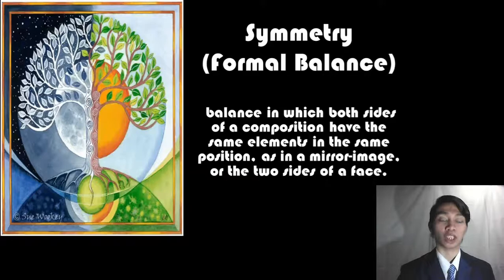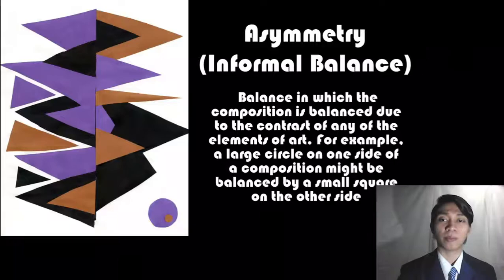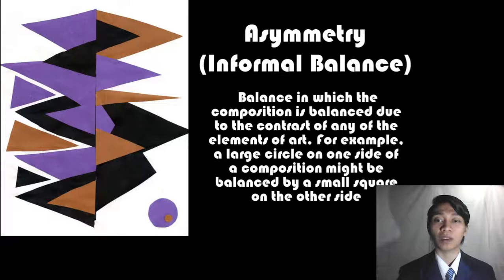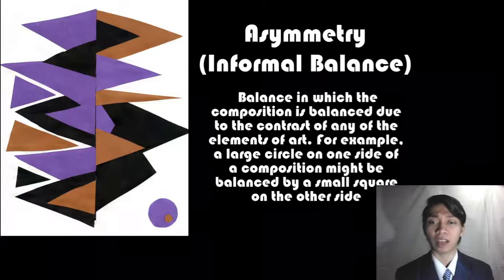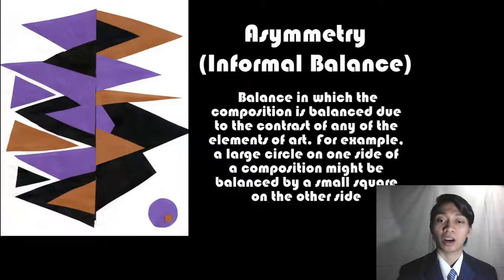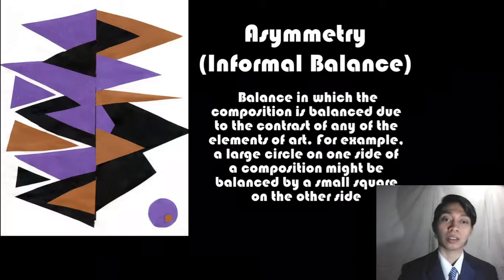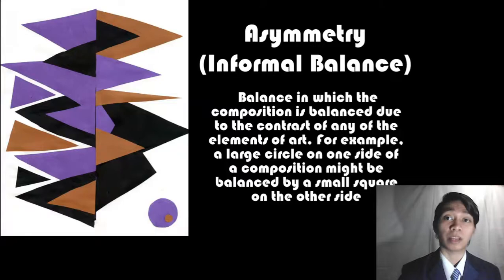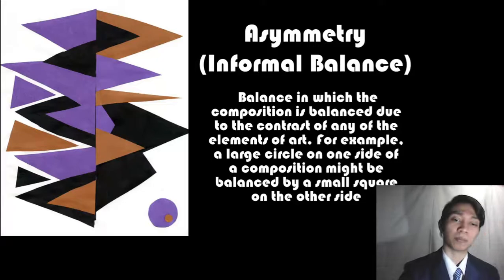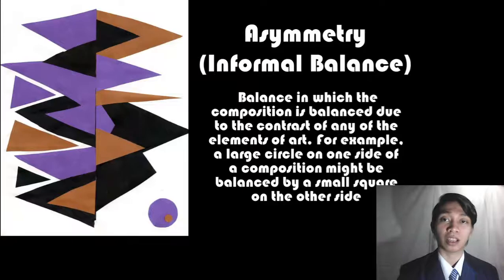Now we go on to asymmetry or informal balance. This is the balance where a composition is balanced due to the contrast of any of the elements of art. For example, a large circle on one side of a composition might be balanced by a small square on the other side. As you can see on this image, this is an asymmetry form — what some artists call 'break the glass' — showing the circle part below in contrast to the triangle and pointed shape.